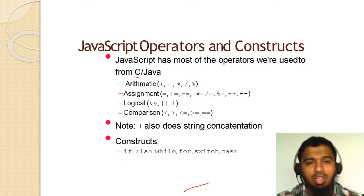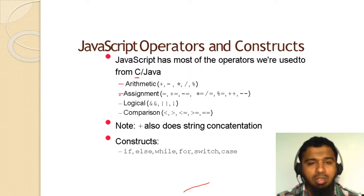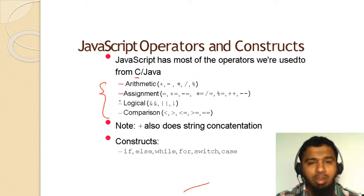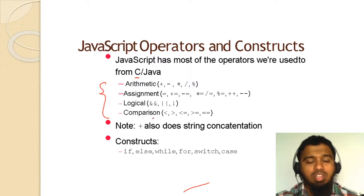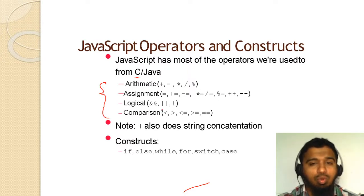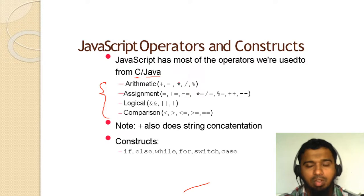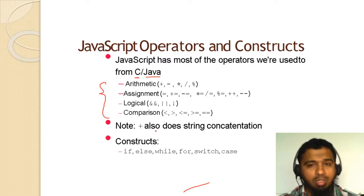I hope you know what C is. Arithmetic, assignment, logical, comparison — all these operators we can use in JavaScript. There is no relation between Java and JavaScript — they are totally different. Java is a programming language, but JavaScript is totally different.